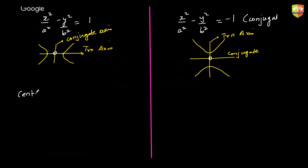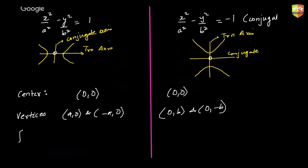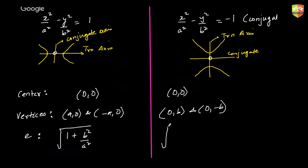For both forms, the center is at (0, 0). Vertices for x²/a² − y²/b² = 1 are at (±a, 0); for the conjugate form, (0, ±b). Eccentricity for the standard form is √(1 + b²/a²), and for the conjugate form it is √(1 + a²/b²).